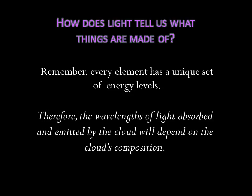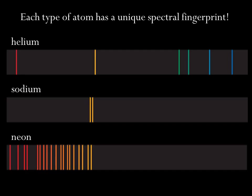This means that the wavelengths of light absorbed and emitted by the cloud will depend on the cloud's composition. Each type of atom has a unique spectral fingerprint. We can figure out what elements a distant object is composed of based on the object's spectrum. It really is amazing.